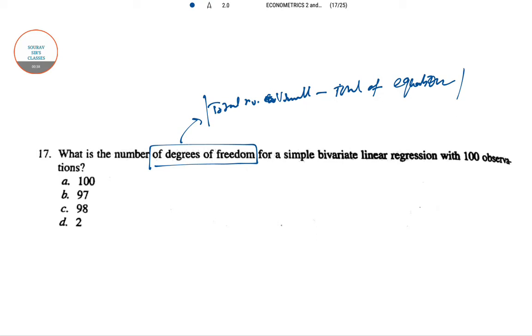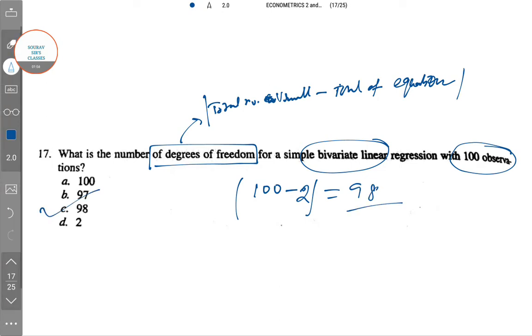In this equation structure, there are 100 different observations and it's a bivariate one. So 100 observations minus 2, since it's bivariate, equals 98. C is the answer.